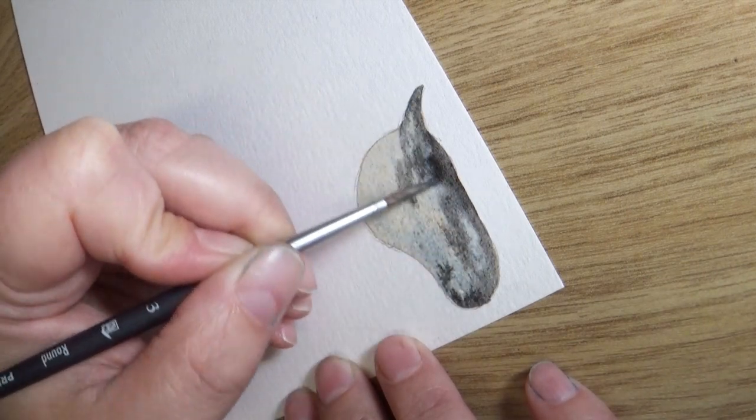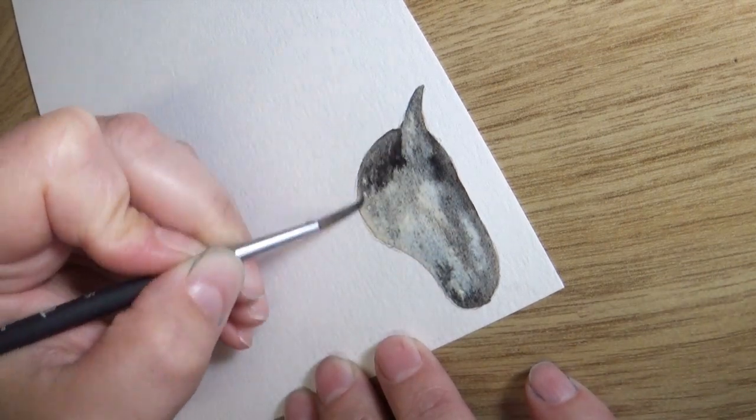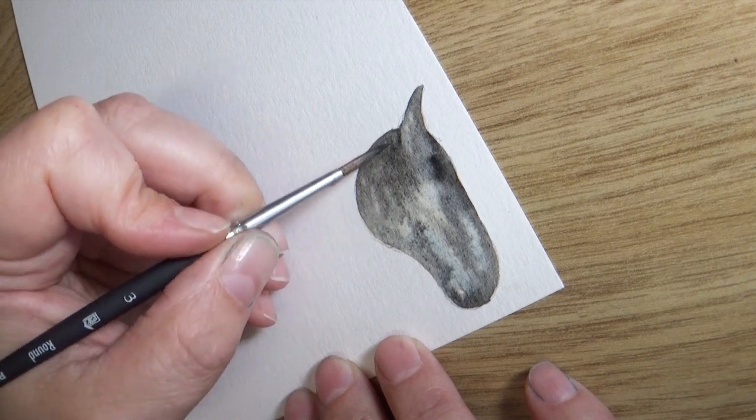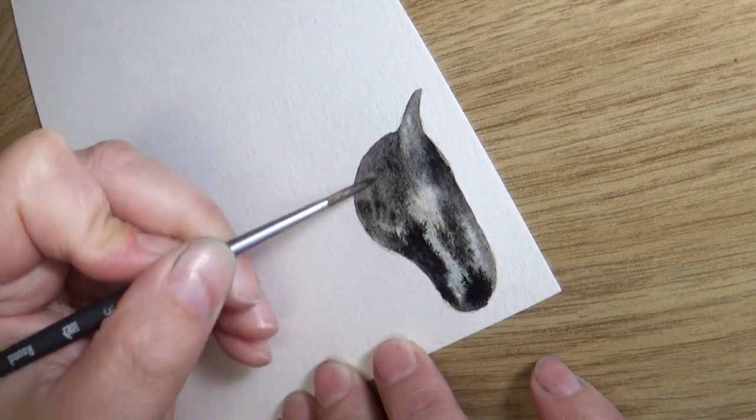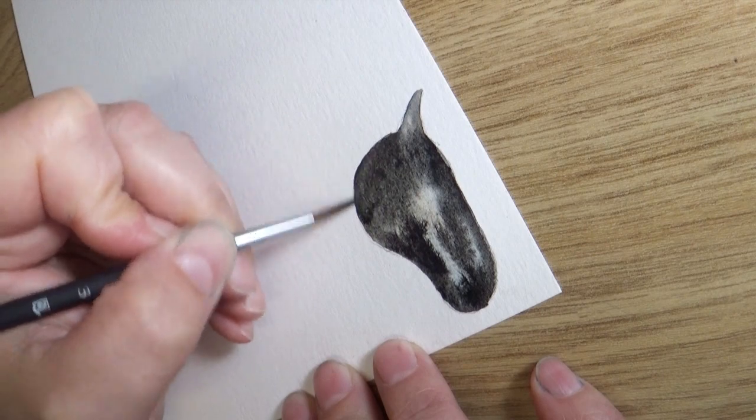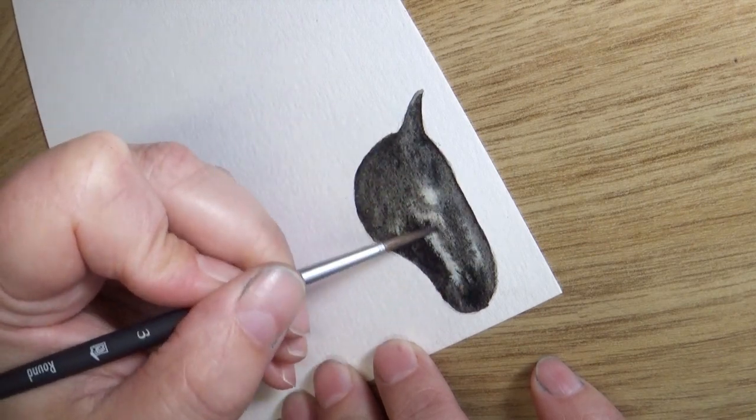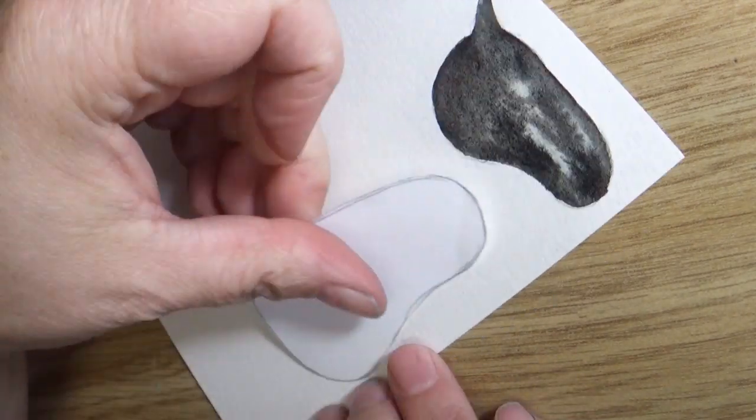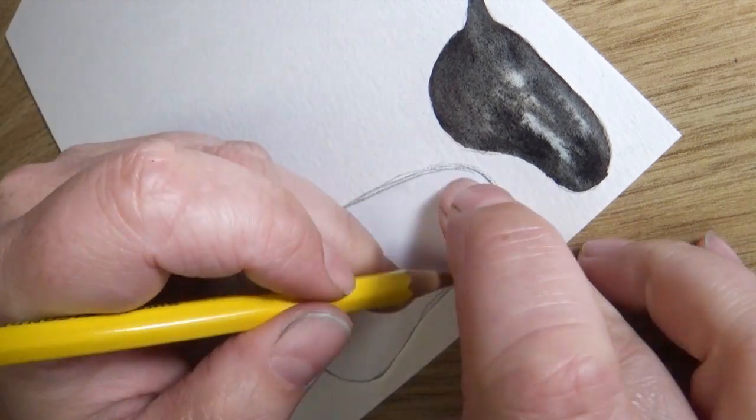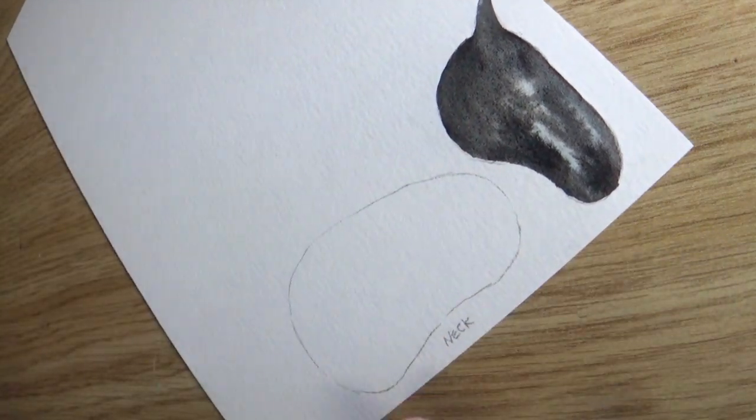If you've ever worked with watercolor you know that you have to let each piece dry a little bit before you can add more layers. So instead of just waiting for one piece to finish, I would move on to separate pieces so I had all these different pieces in various states of being painted.